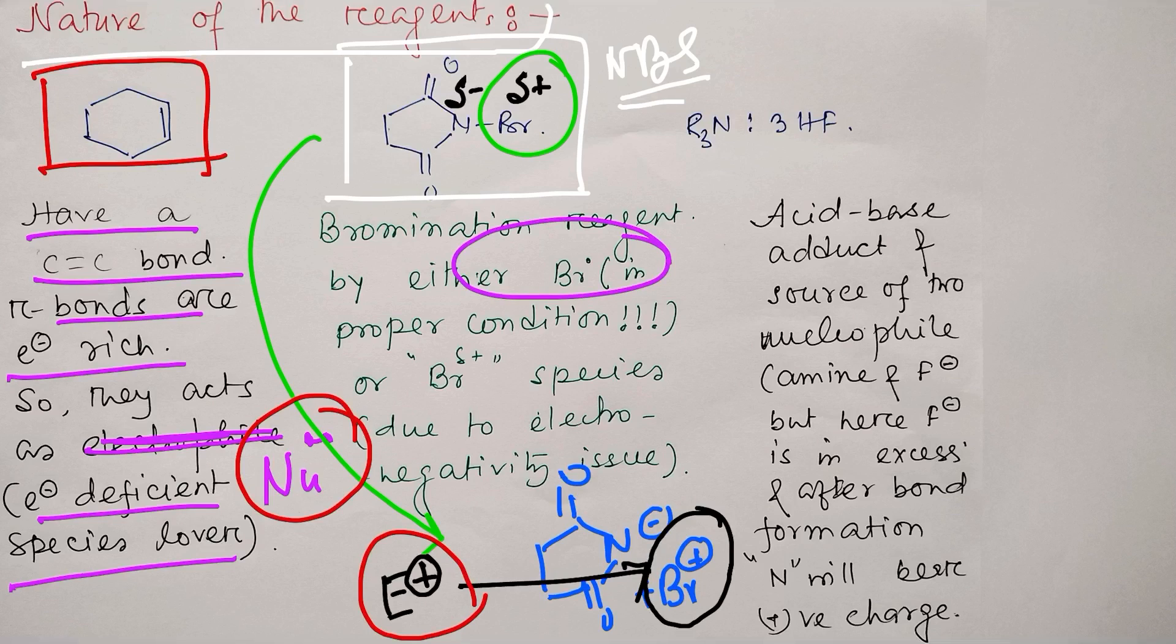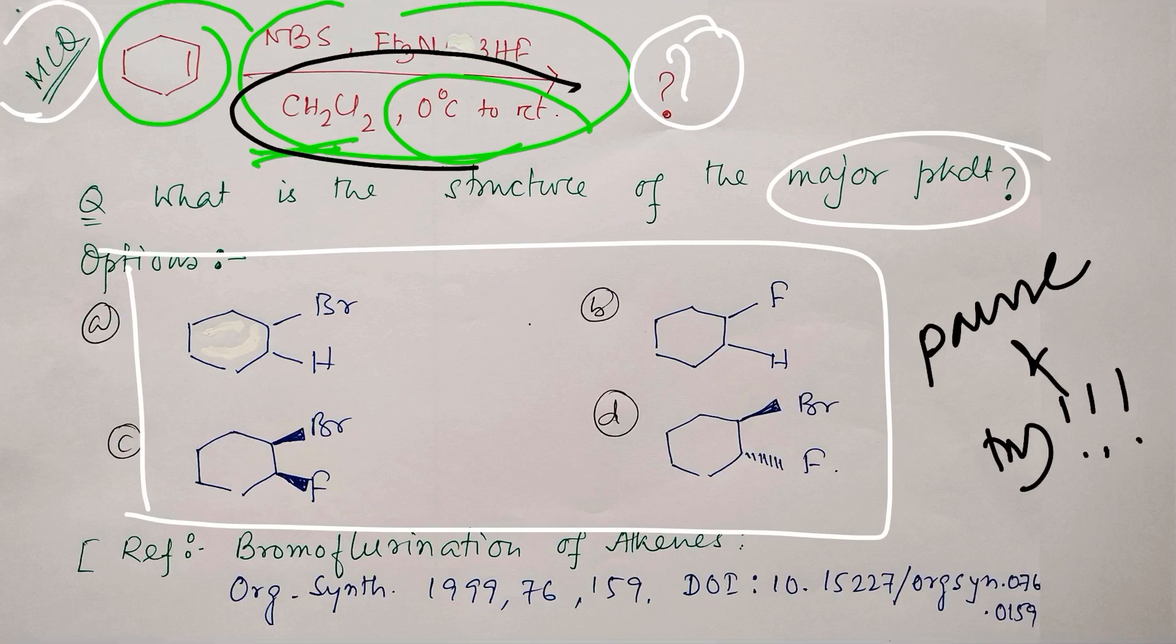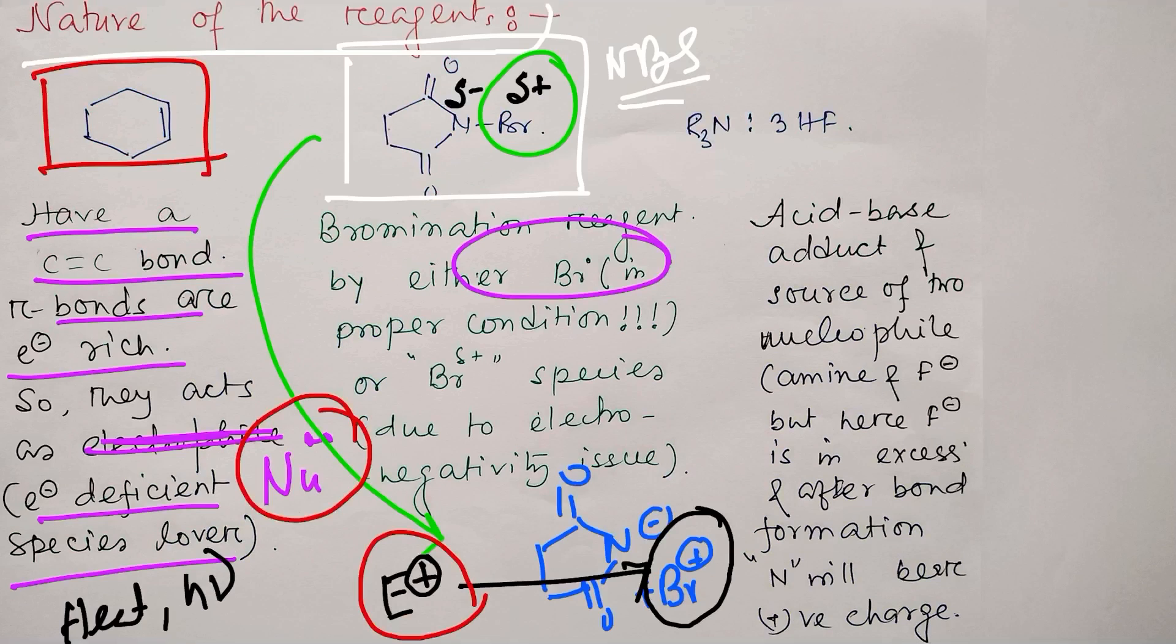The radical species generates under very drastic conditions, means heat, you may consider heat or h nu. But try to remember what was the reaction condition here: see, zero degree centigrade to room temperature. So radical generation is not likely here.